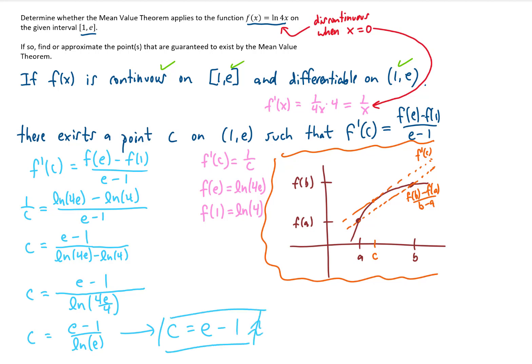That's an exact value of c. If we want an approximate value, that would be about 1.718 and so on. And 1.718 is on the interval from 1 to e that we were given in the problem. So I think we've done it.